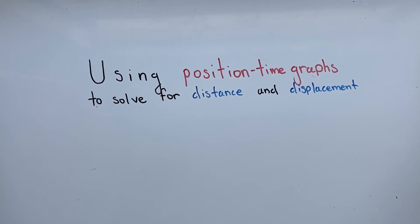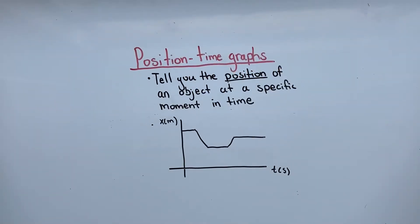Welcome to the second video of UNO1 One-Dimensional Motion. In this video, we're going to discuss how to find the distance and displacement by looking at a position-time graph. You may have seen position-time graphs in your physics or math class, but if you're new to this, a position-time graph tells you an object's position at a specific moment in time.